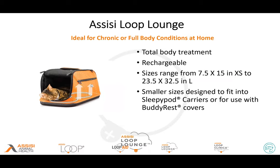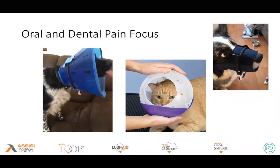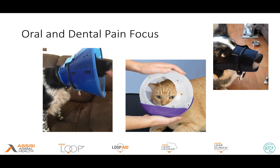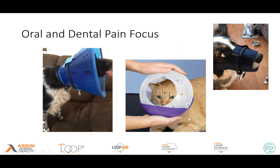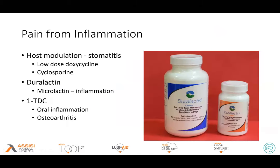With some of our smaller patients, we can use a loop lounge — the smaller sizes can fit in Sleepypod carriers or on some covers. The loop lounge works a little bit better with cats; trying to find ways to keep the region within the loop for treatment can be a little challenging. We're always looking for good responses. There is an air muzzle for cats invented by a veterinarian that can help with blood draws, and there's even a piece you can put on for nebulizers. We're also looking for inflammation treatment with these patients.